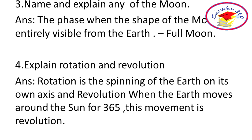Number 4. Explain rotation and revolution. Answer: Rotation is the spinning of the Earth on its own axis. And revolution is when the Earth moves around the sun for 365 days. This movement is revolution.